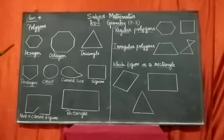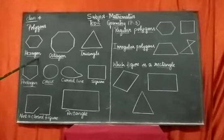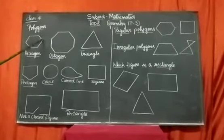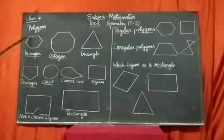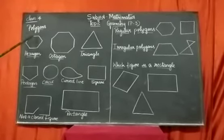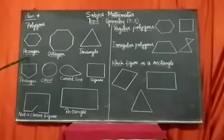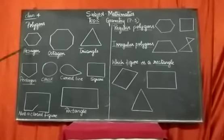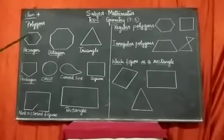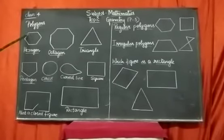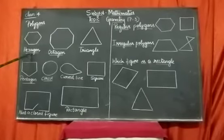I have taken an example of a hexagon. Why is it a hexagon? Because it has how many sides? 1, 2, 3, 4, 5, 6 — a 6-sided figure is called a hexagon. This is a polygon because the angles formed in this hexagon are all equal and the sides are also equal. It is a closed figure formed by line segments.